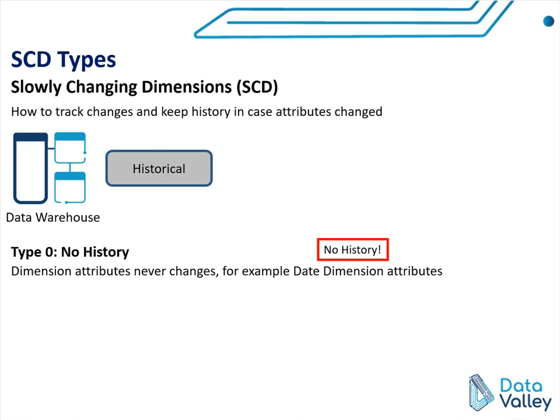Of course, this is not what we typically want, but in some dimensions — maybe reference dimensions, just a lookup for some values — we don't actually need to track history or change values. So we keep it as it is. It's a very rare and special case. So in Type 0, we don't have history.